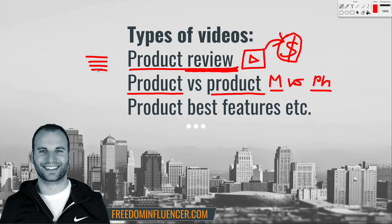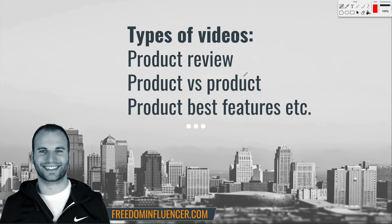We want to see what people are actually out there searching for. I've already done the research — if you do these video types you will get traffic. If you want to do your own keyword research, go to the Google Keyword Planner. The last type I recommend is a 'best features' video, where you highlight the top features of the products you're promoting.